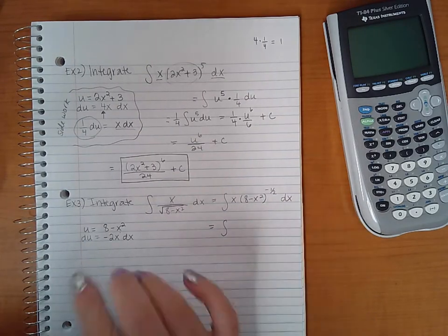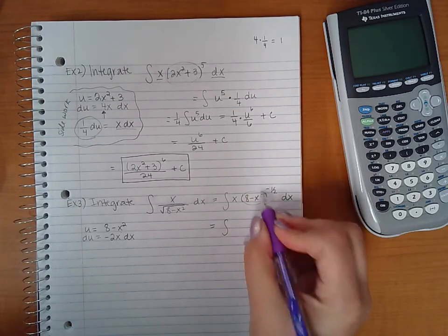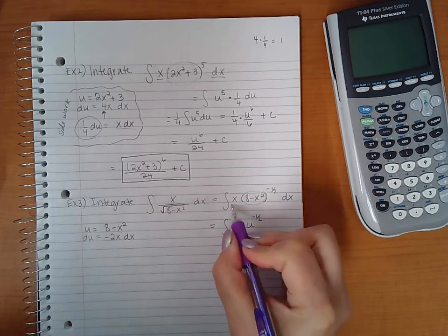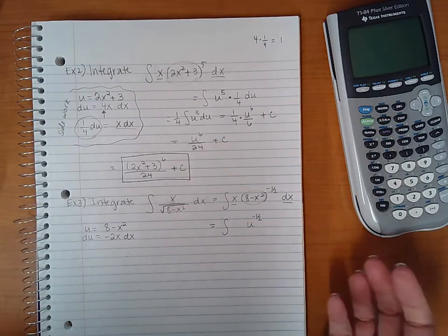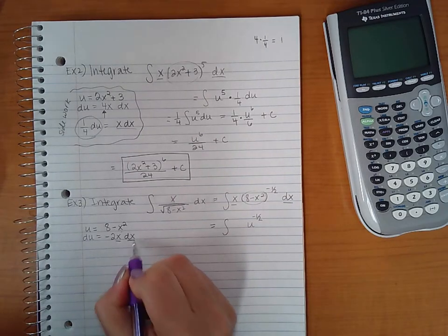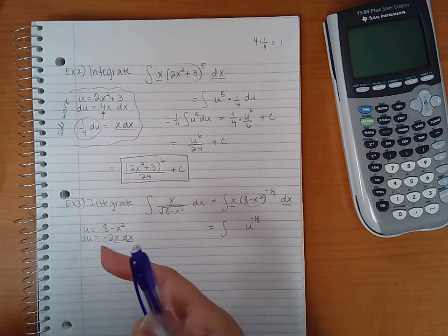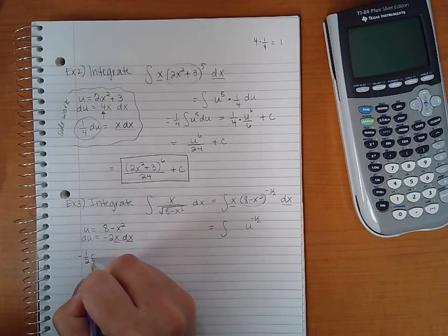So here I'm going to go back in and u is going to become 8 minus x squared. So this is going to become my u. Now the x and dx need to get replaced as well. But with what? I have x and dx here, but I have this extra multiplier here, negative 2. So applying the same logic as example 2, I can multiply both sides by negative 1 half.